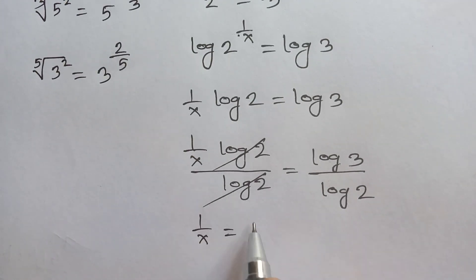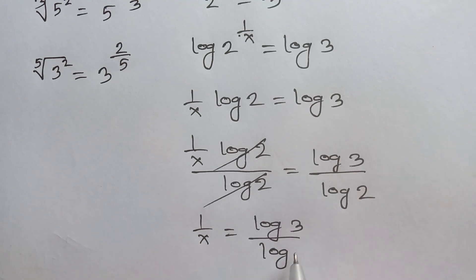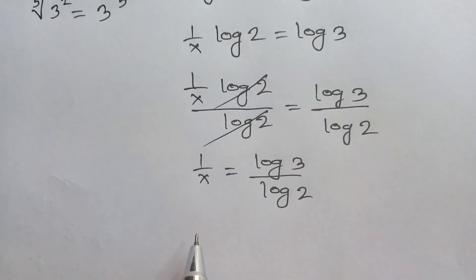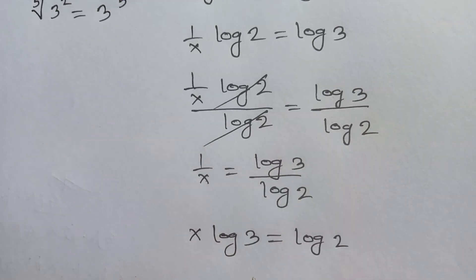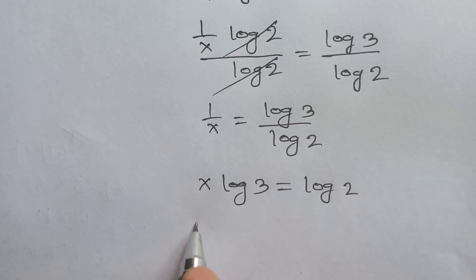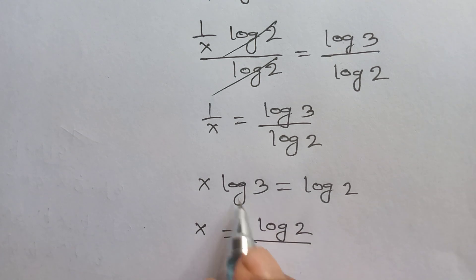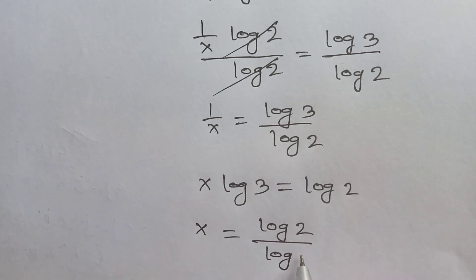And next step we will do cross multiply, so x log of 3 is equal to log of 2. And next step, x is equal to log of 2 over log of 3.